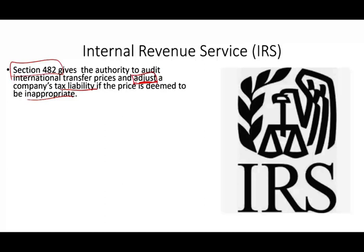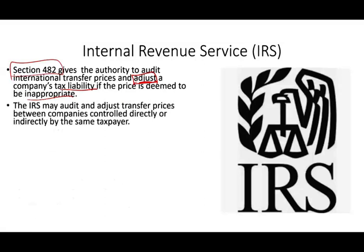The IRS can assume a different price and, based on that different price, recompute your tax liability and make you pay more taxes. The IRS may audit and adjust the transfer prices between companies controlled directly or indirectly by the same taxpayer. Obviously, transfer prices are between related parties.